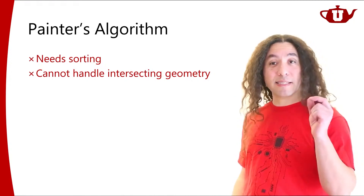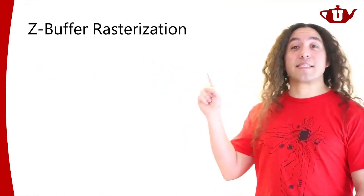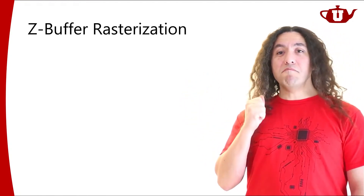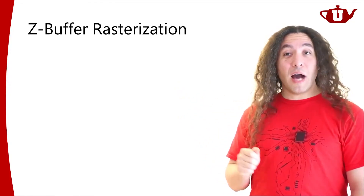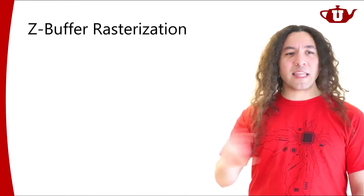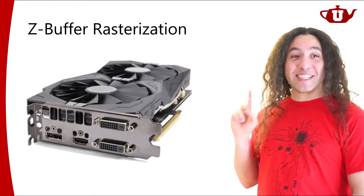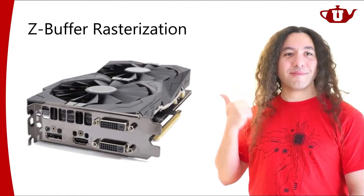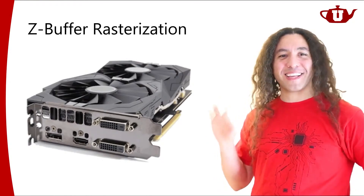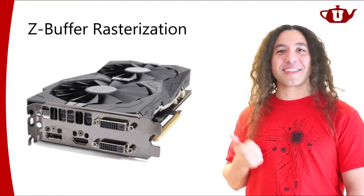We can replace the painter's algorithm with a significantly better rasterization-based rendering algorithm: Z-buffer rasterization. This is probably the most popular and most frequently used rendering algorithm on Earth. Way more images are generated using this algorithm than anything else, by orders of magnitude, because all of our GPUs use this algorithm. Everything you see on your screen — even 2D windows — is drawn using Z-buffer rasterization.